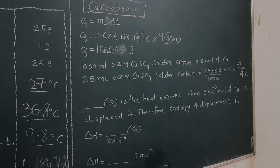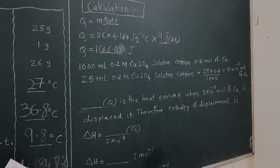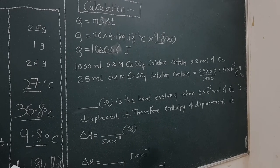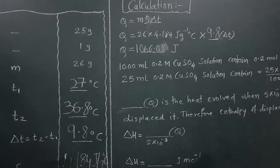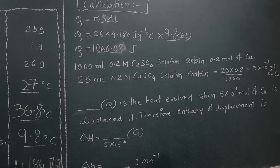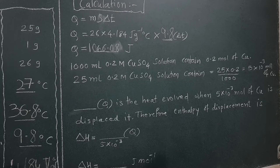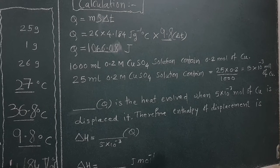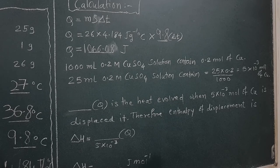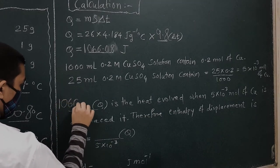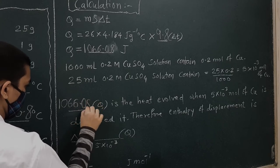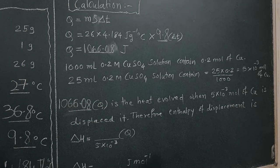1000 ml of 0.2 molar copper sulfate solution contains 0.2 mol of copper. So 25 ml of 0.2 molar copper sulfate solution contains 25 × 0.2 divided by 1000, which equals 5 × 10⁻³ mol of copper. Therefore, Q = 1066.08 J is the heat evolved when 5 × 10⁻³ mol of copper is displaced.